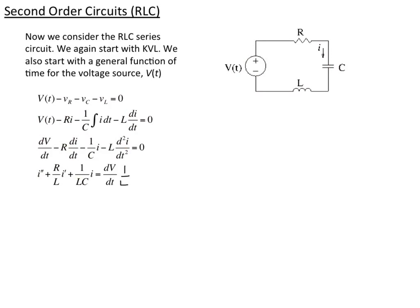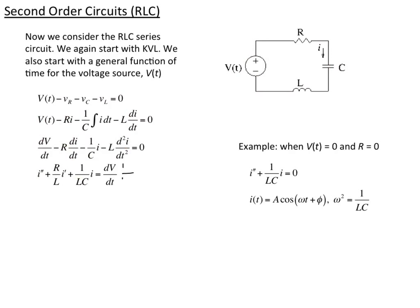Now all we have to do is solve that equation. But first, let's consider the case where the resistance is 0 and there's no voltage source — just an LC circuit. The equation becomes i'' + i/(LC) = 0. A cosine will solve that because the second derivative of a cosine gives back the cosine with a minus sign. So the second derivative of A·cos(ωt + φ) gives minus A·ω²·cos(ωt + φ). This solves the equation as long as ω² = 1/(LC). So we get a characteristic sloshing back and forth between the inductor and the capacitor at frequency ω = sqrt(1/LC).